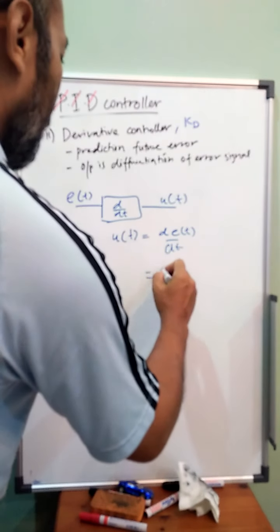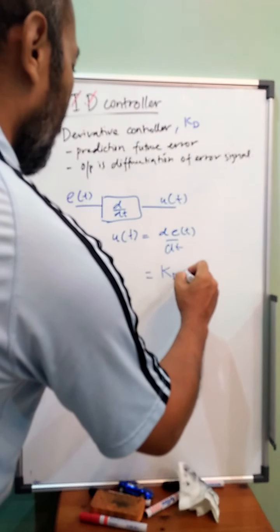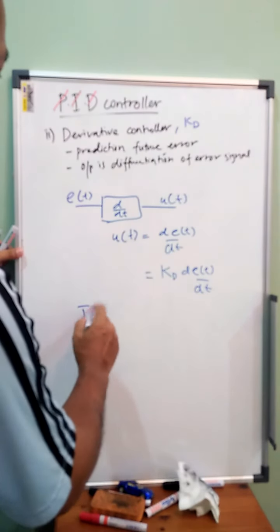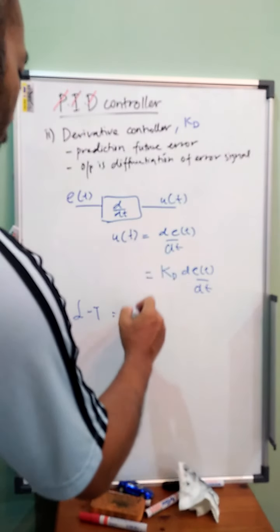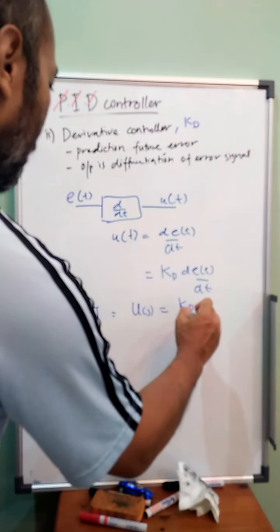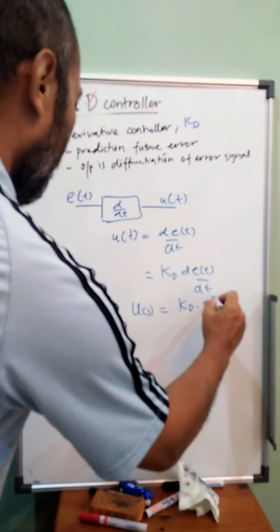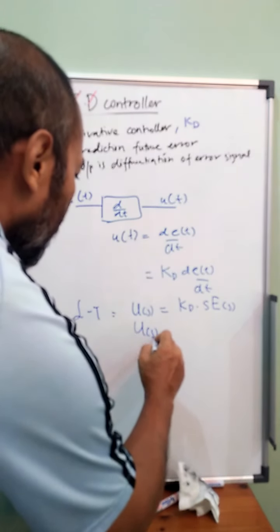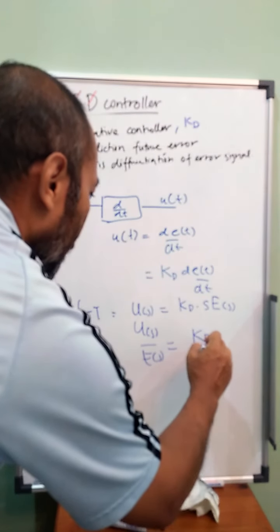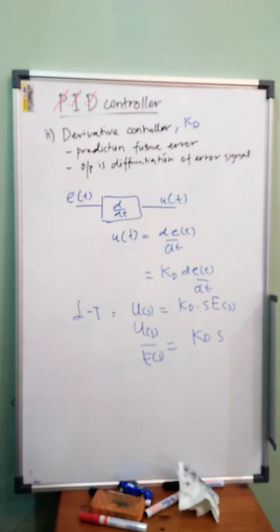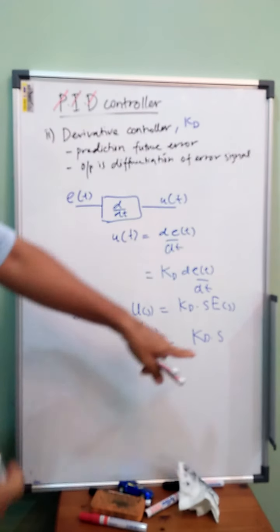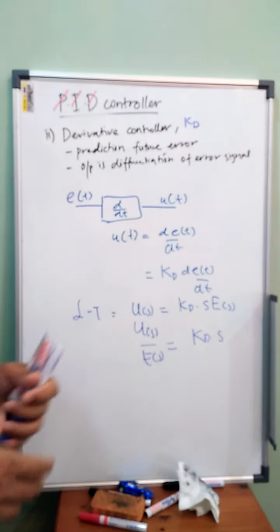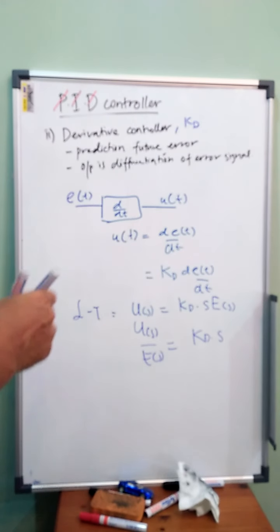So we get Kd d over dt. Transfer function, I'm sorry, Laplace transform. We get u(s) equal to Kd times s. That's the Laplace transform for differentiation of error. So u(s) over e(s) will be equal to Kd times s. This one is a constant for the controller.